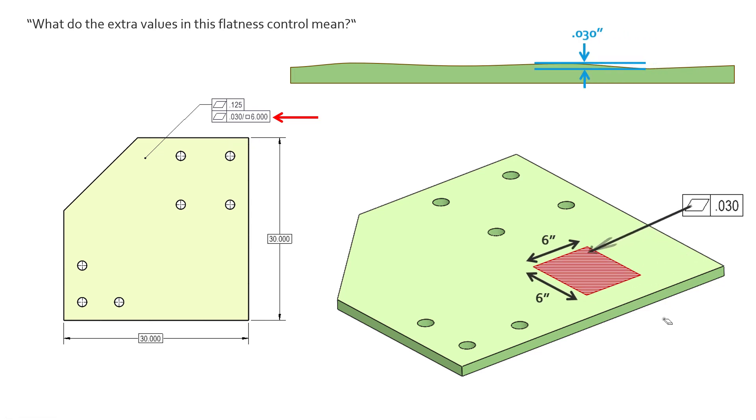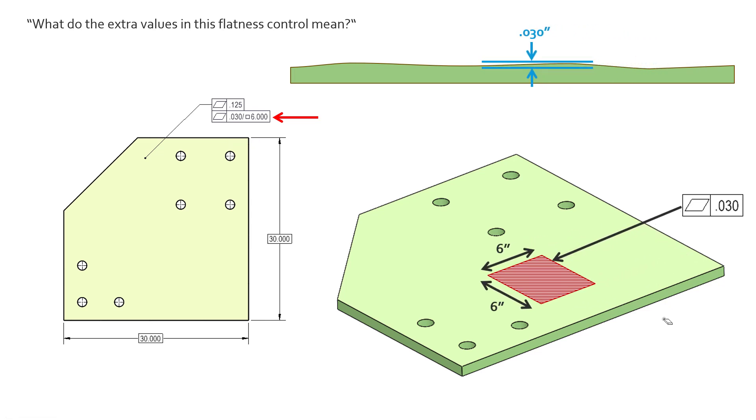That says any six by six square of this surface, whether it's here or here or here, the surface cannot deviate more than 30 thousandths, or the space between two parallel planes spaced 30 thousandths apart.